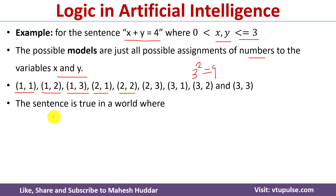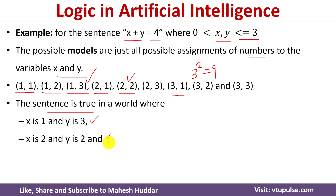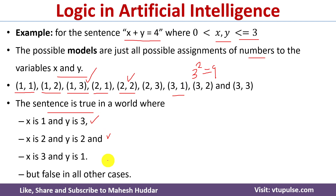We need to select models which are true for the given sentence. The first model (x=1, y=1) is not true because 1+1 is not equal to 4. But the third one, x=1, y=3: 1+3 equals 4, so this is a true statement and a correct assignment. Similarly, x=2, y=2 is correct and x=3, y=1 is also correct. The remaining assignments are false.